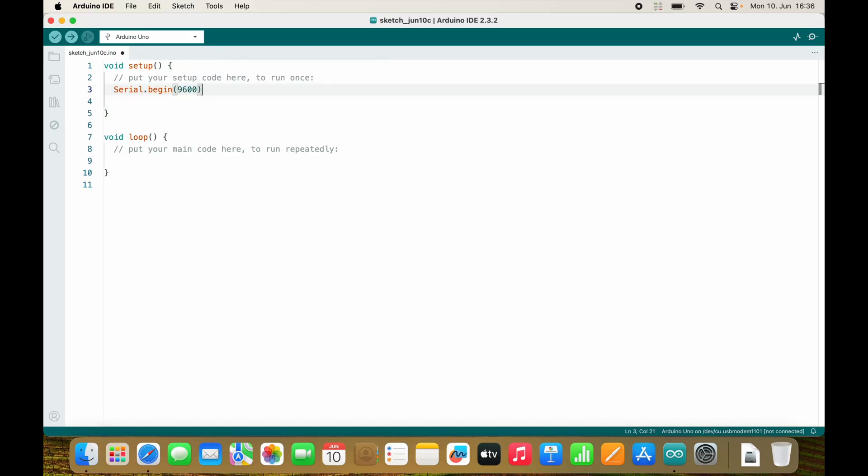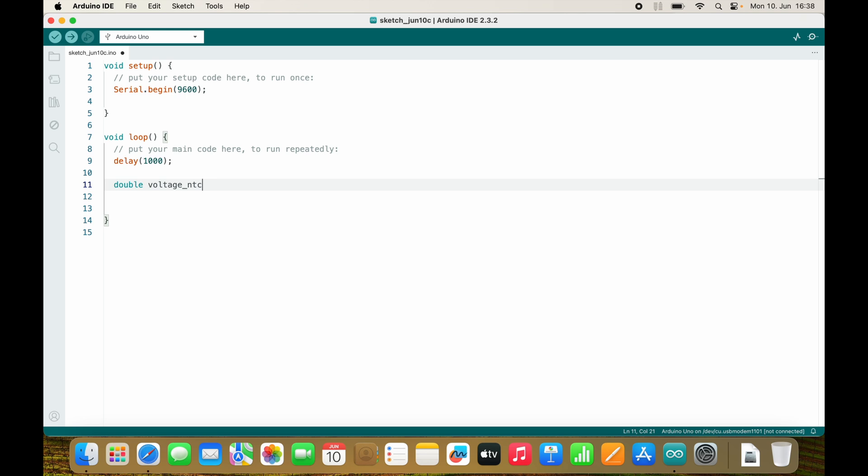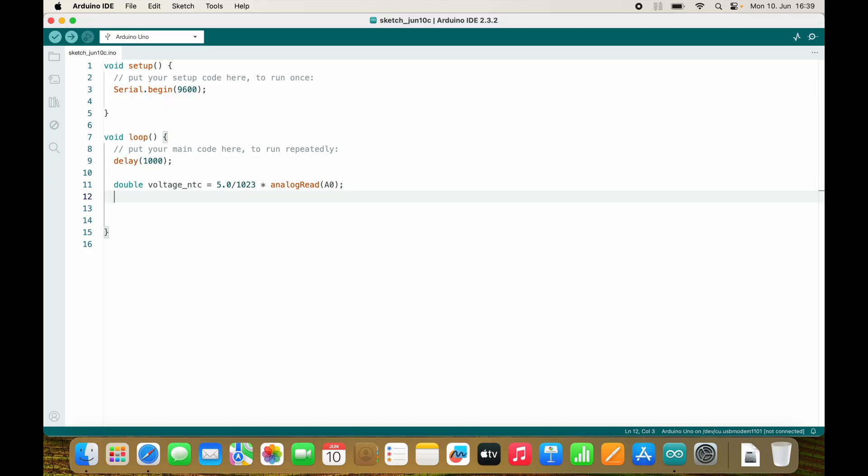Let's serial begin 9600. First I will start with a delay. Let's wait for one second before we send the value. So the first thing that we need is the voltage V_NTC. And if you don't know how this is done, check out my video about analog read. Double voltage_NTC equals 5.0 divided by 1023 times analog read A0. So let's print this and see if the voltage makes any sense. I would expect around 2.5 volts right now.